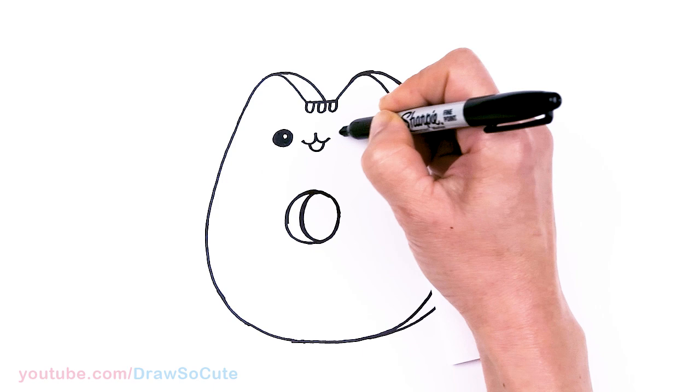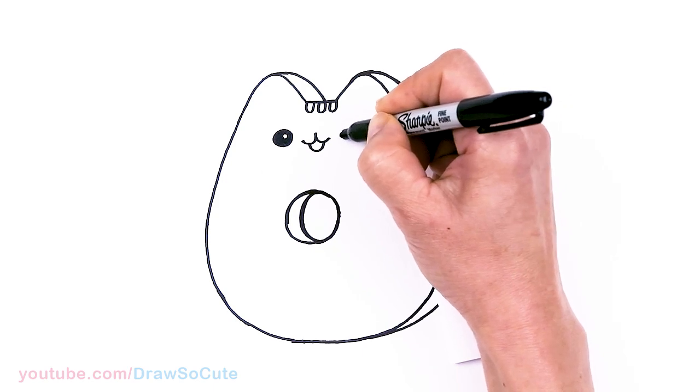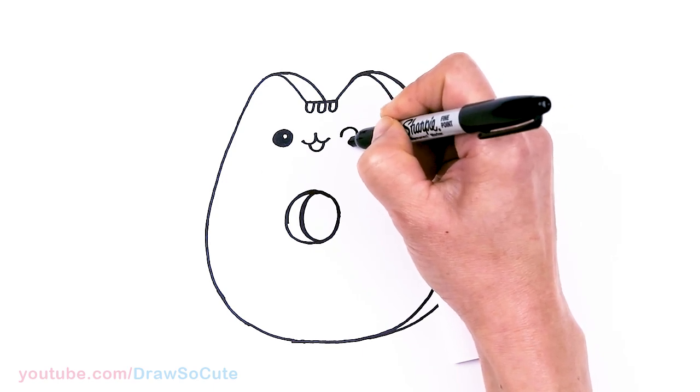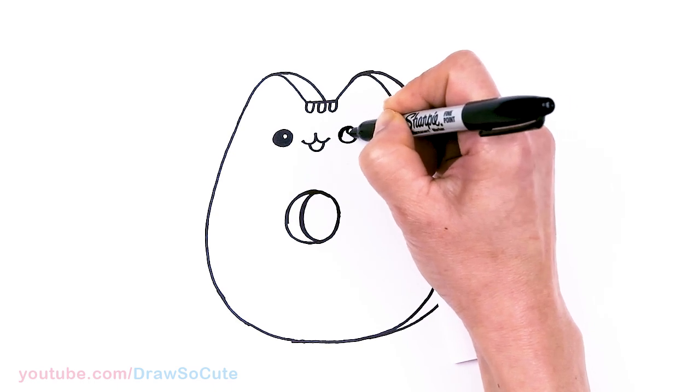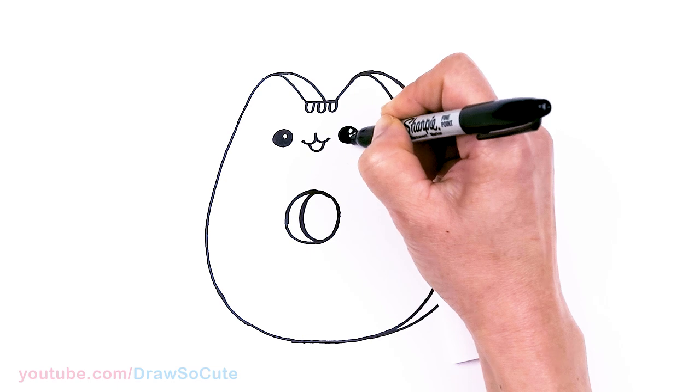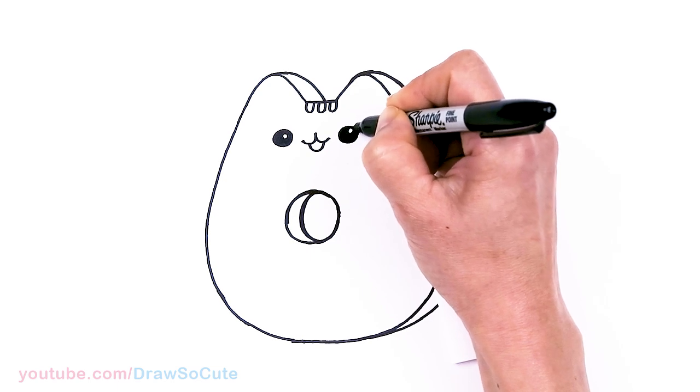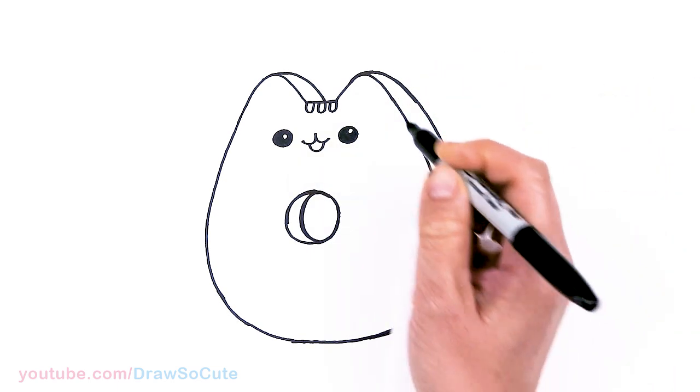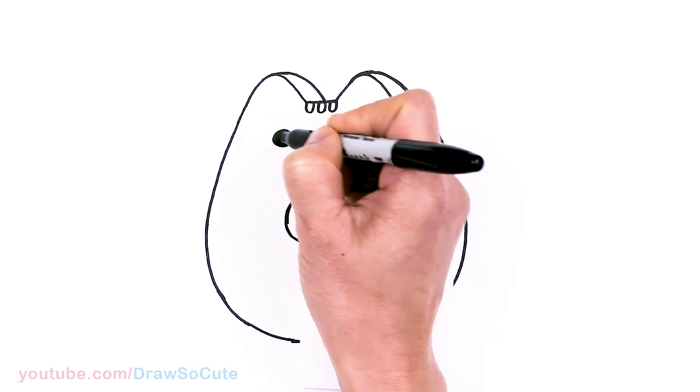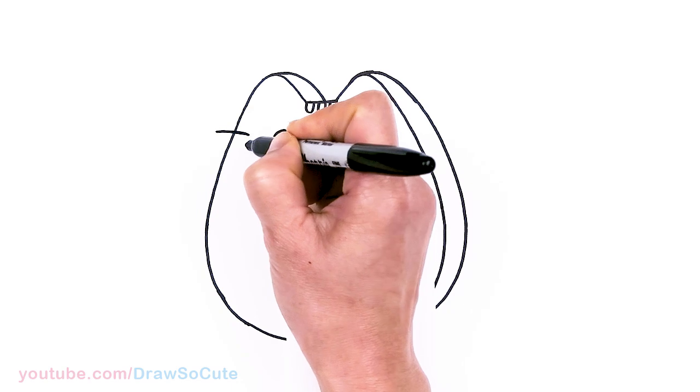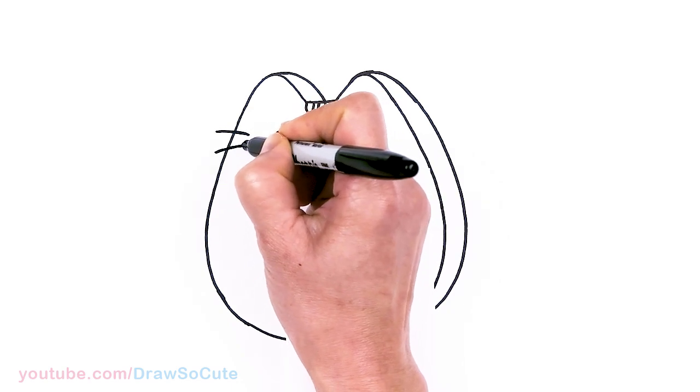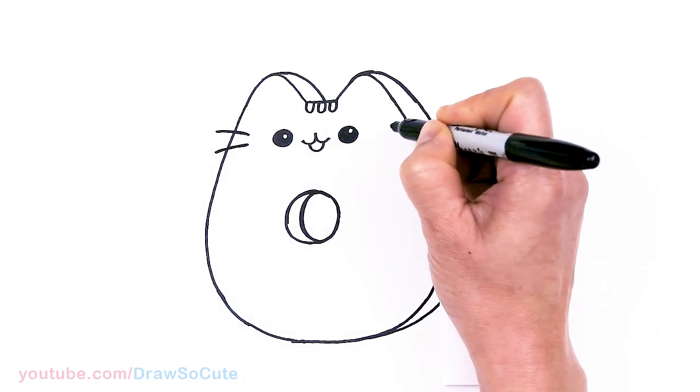So same thing right across. So about right here. There. And now that we have that, let's not forget the whiskers. So right where the eyes are, we're going to come right here and draw two whiskers. And same thing on this side.